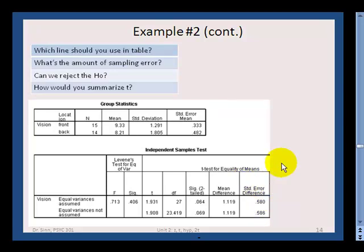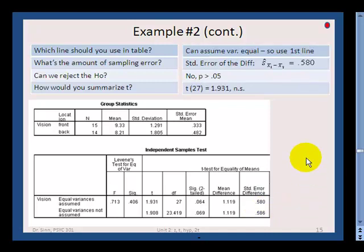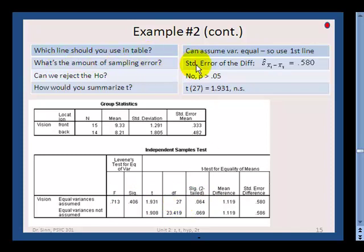Now look at the output. First question: which line should you use in the table — top or bottom? Remember, check if the variances are equal. As long as Levene's test doesn't drop below 0.05, use the top line, which gives more degrees of freedom. The second question: how do you measure sampling error? That's the standard error of the difference — the new measure of standard error — and that's the value shown in the output.